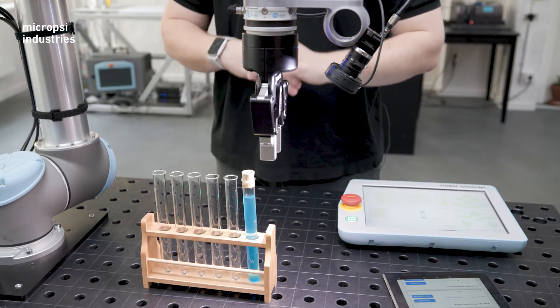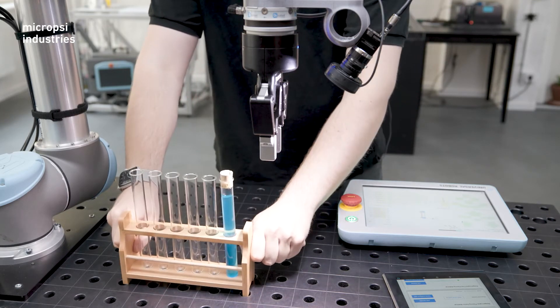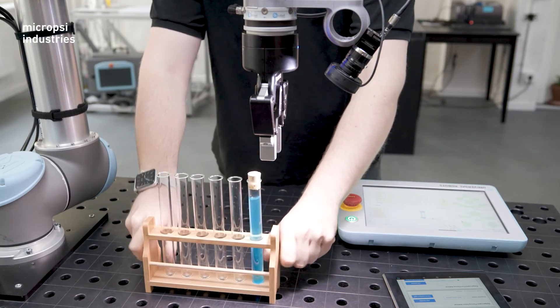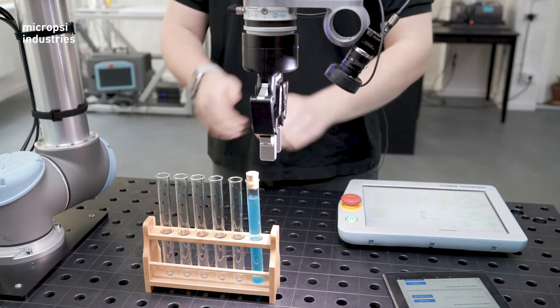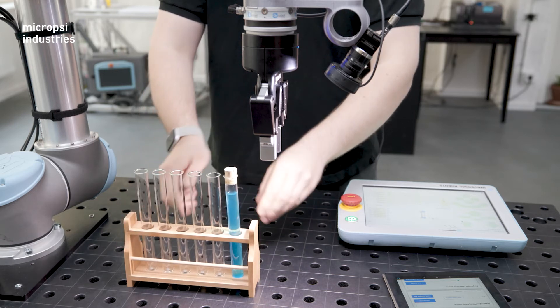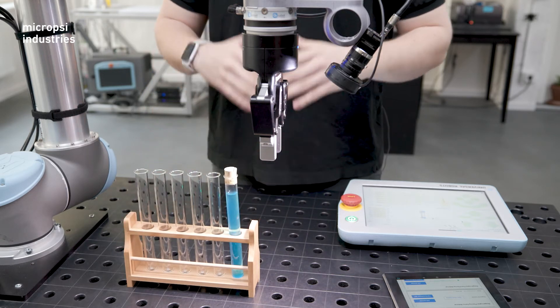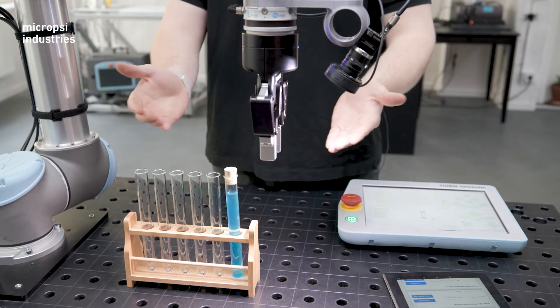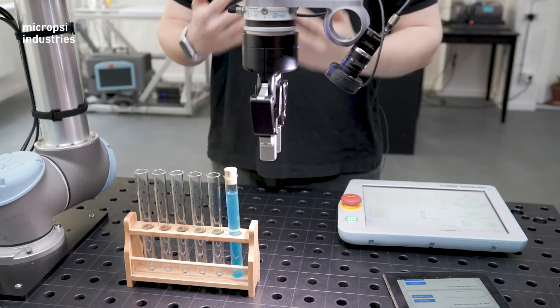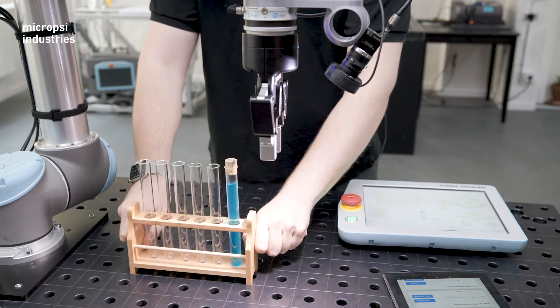But picking up a beaker is tricky, especially if the tray isn't in the exact same place every time the robot approaches. The position of the beakers vary. This is normal for workpieces delivered in a factory setting. Because the robot is essentially blind, it can't see where things are. As a result, it can't cope with the variance.